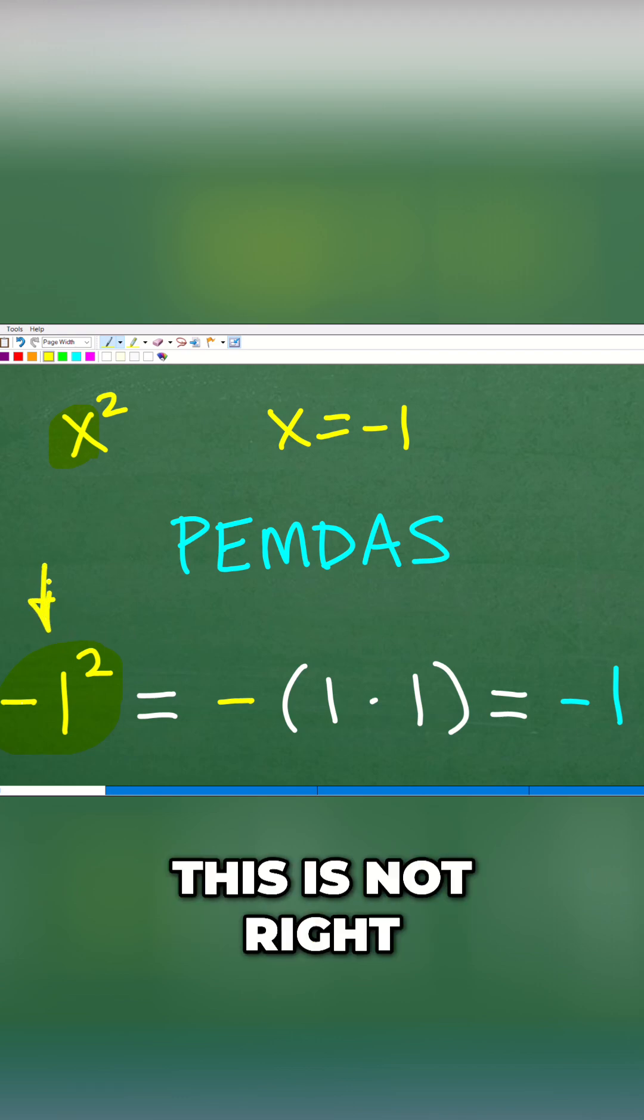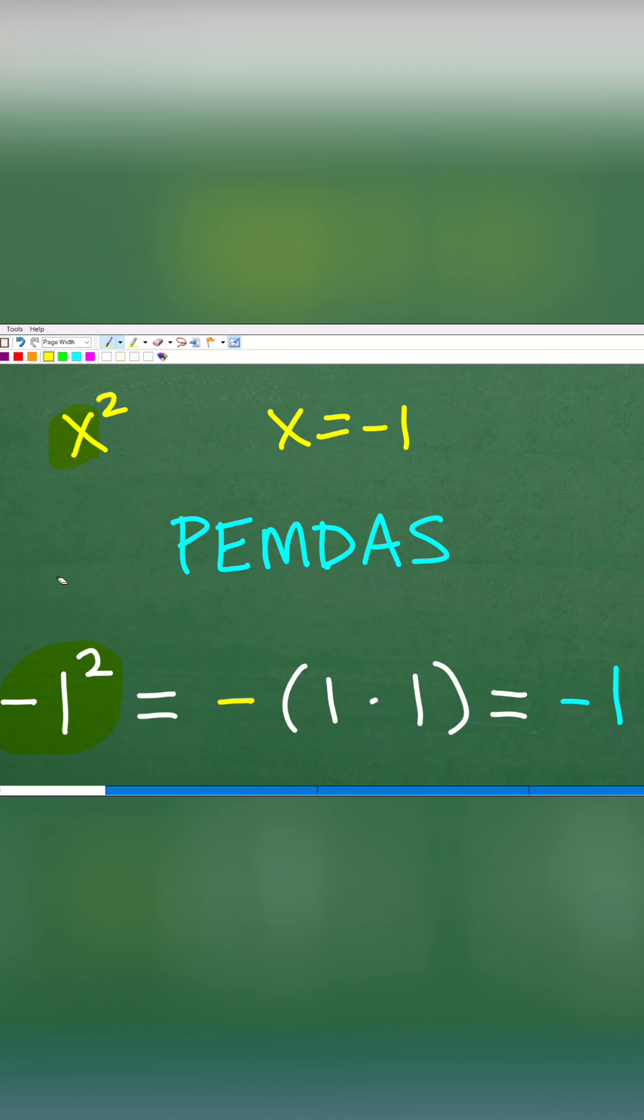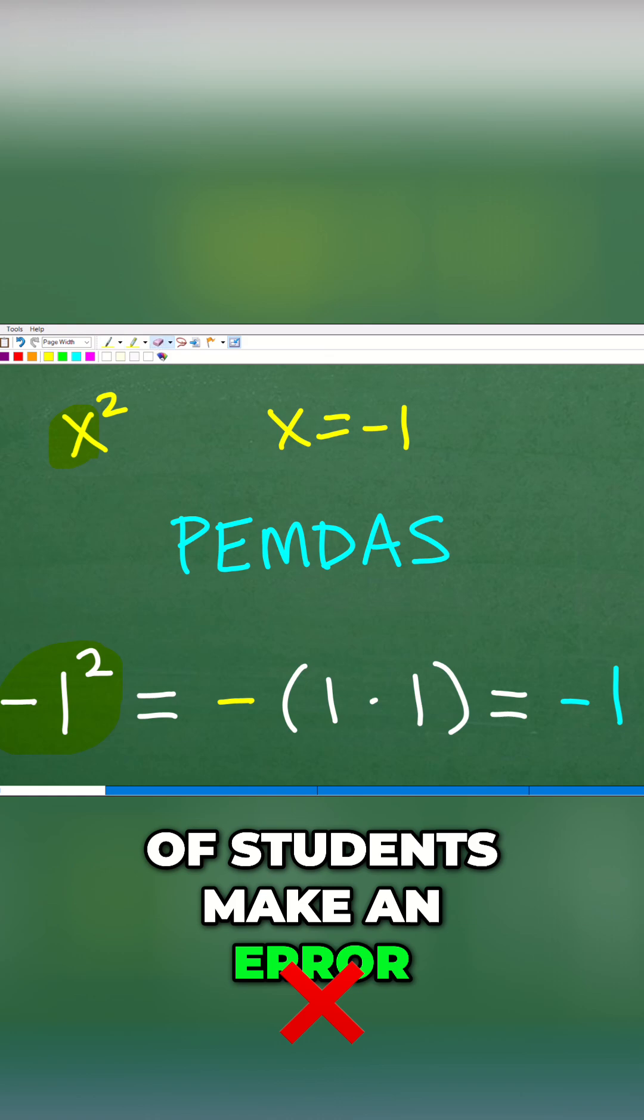Okay, this is not right, and I'll explain to you in one second why. But anyways, let's just take this expression right here, negative one squared, because this is another place where a lot of students make an error.